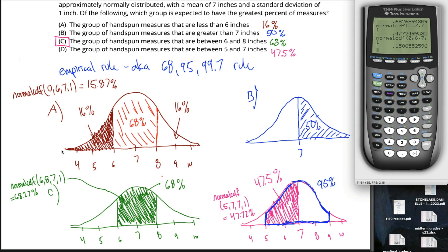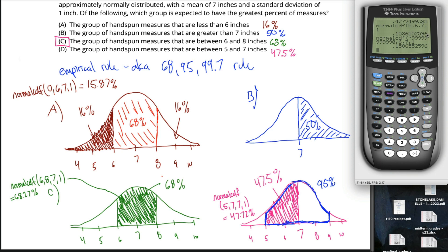You might argue a better approach is to use a really large negative number instead of 0 as the lower bound. But if you put in something like negative 999,999,999, the answer is basically identical to using 0 as the lower bound, because there's so little area to the left of 0. The decimal places are exactly the same either way.